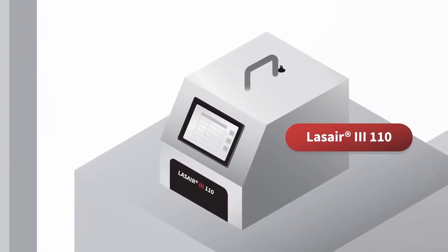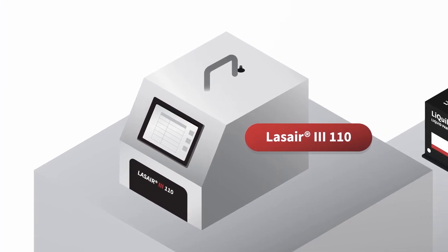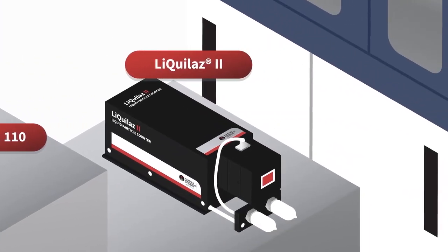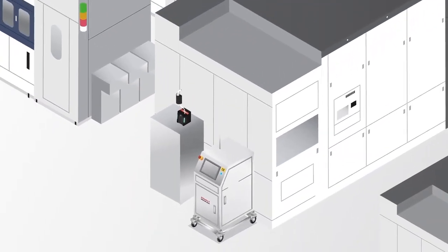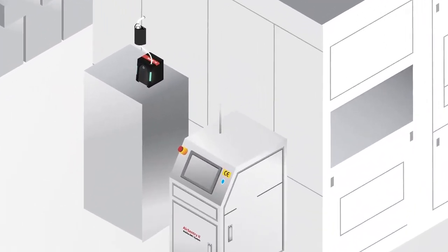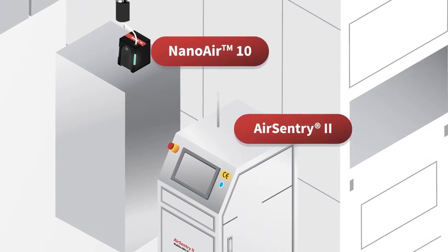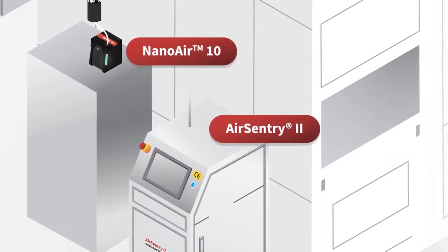LAS Air 3-110 monitors the entire clean room. Liquilas 2 is used in slurry particle monitoring, while AirSentry 2 and NanoAir 10 units are placed in the lithography area and tools to ensure air quality, thereby enhancing yield.